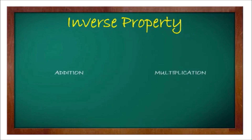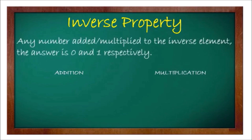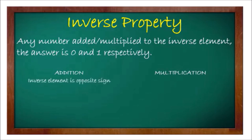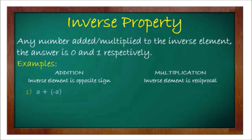The last property is the inverse property of addition and multiplication. This property states that any number added or multiplied by its inverse element gives 0 and 1 respectively. The additive inverse is the opposite sign of the number. For addition: a plus negative a equals 0. For example, 7 plus negative 7 equals 0, and negative 3 plus 3 equals 0.